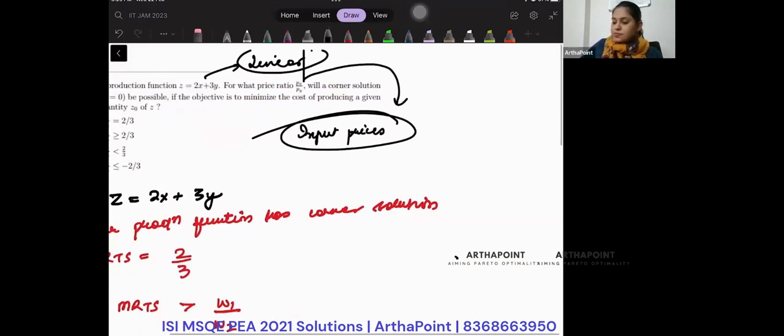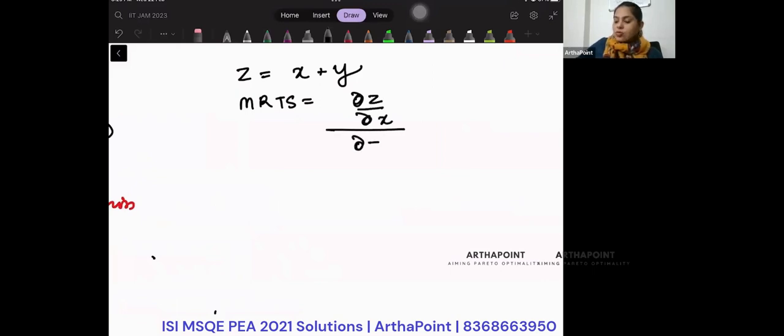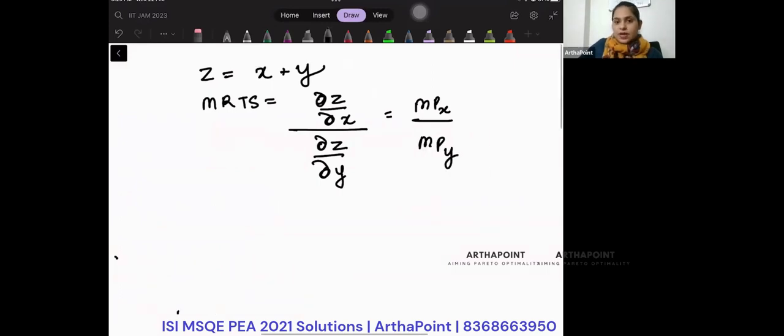If you remember, we said that if I have a general production function, if my production function is x plus y, its MRTS is how output changes as input changes. It means MP of input 1 divided by marginal product of input 2. This is 1.